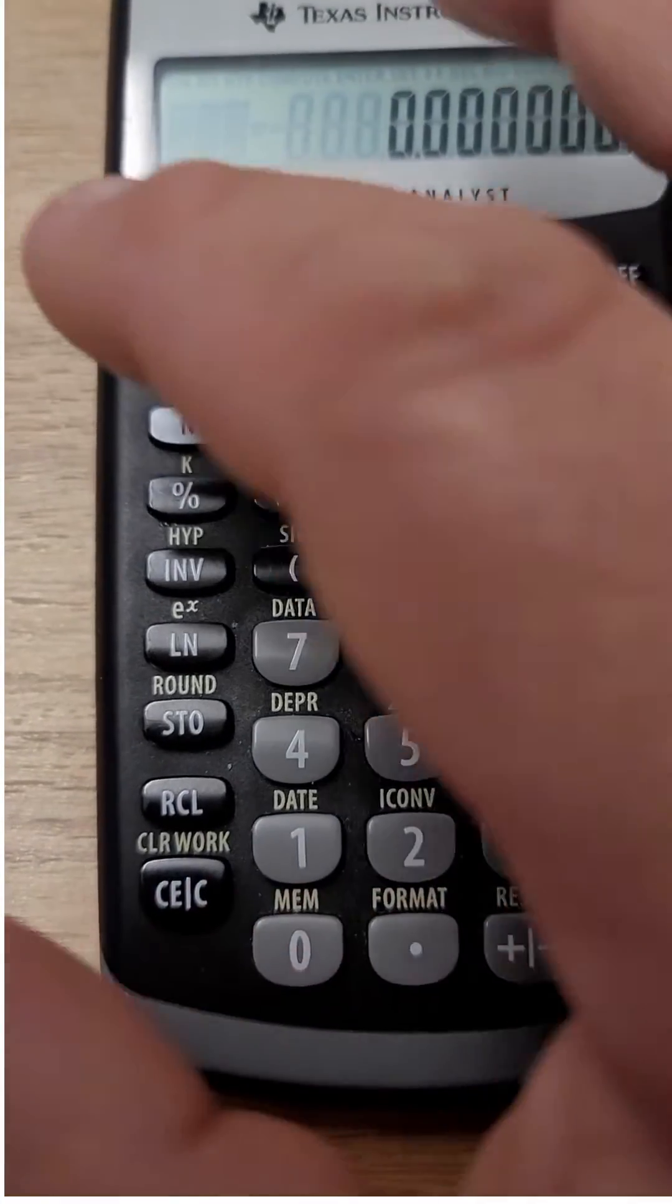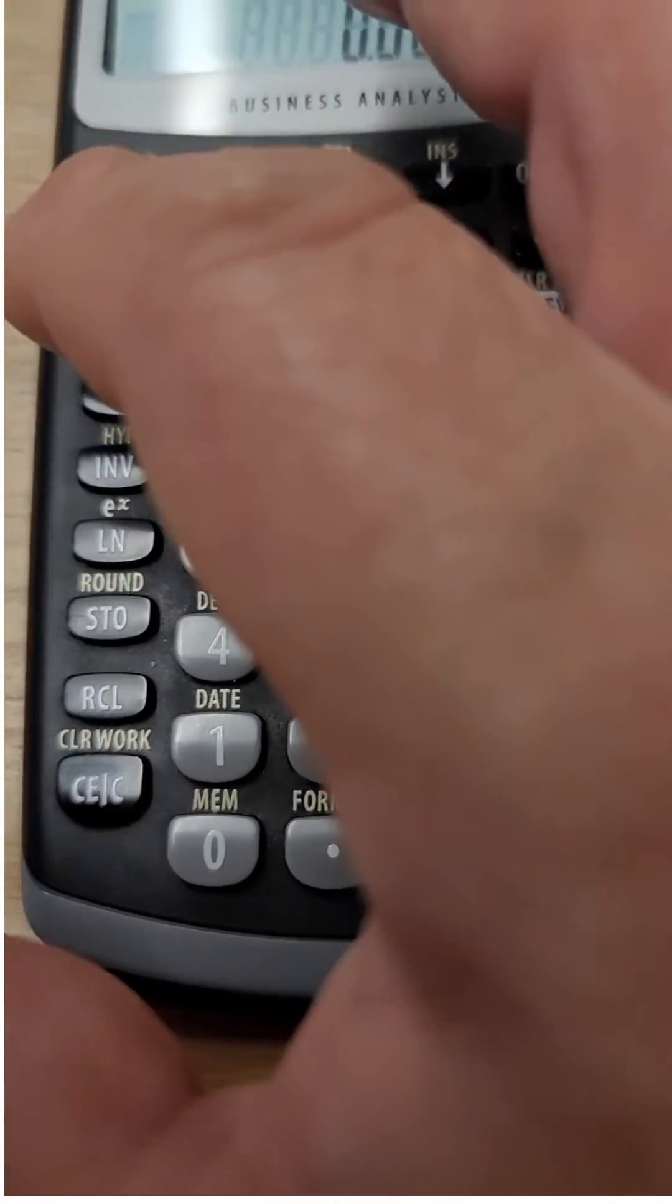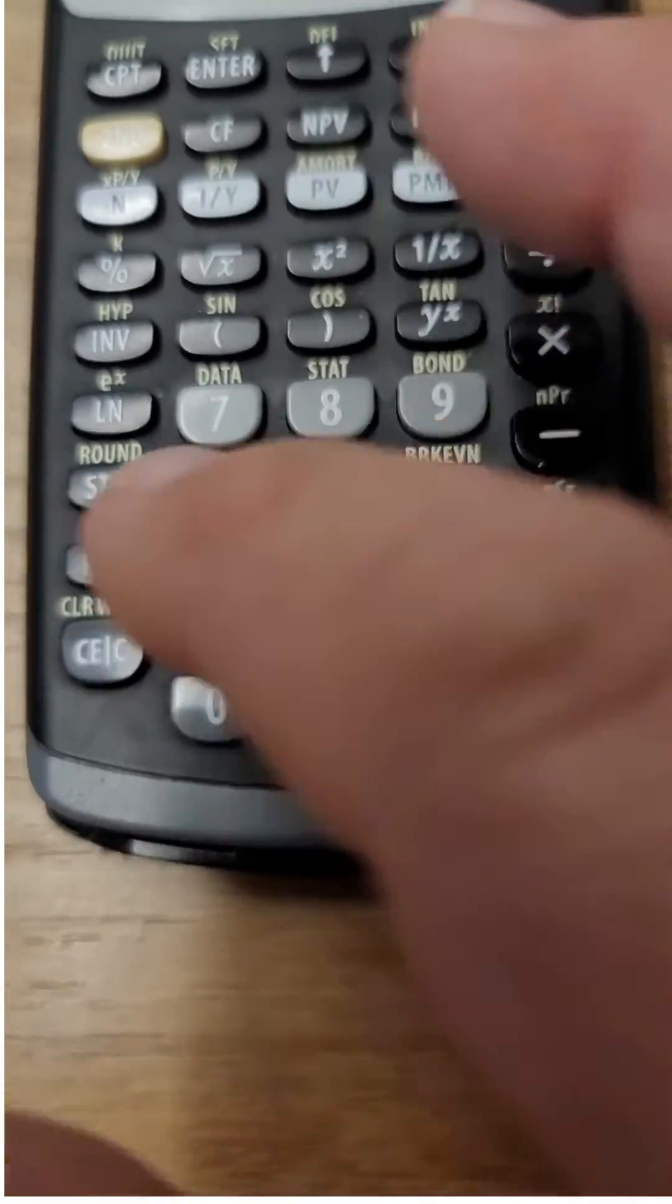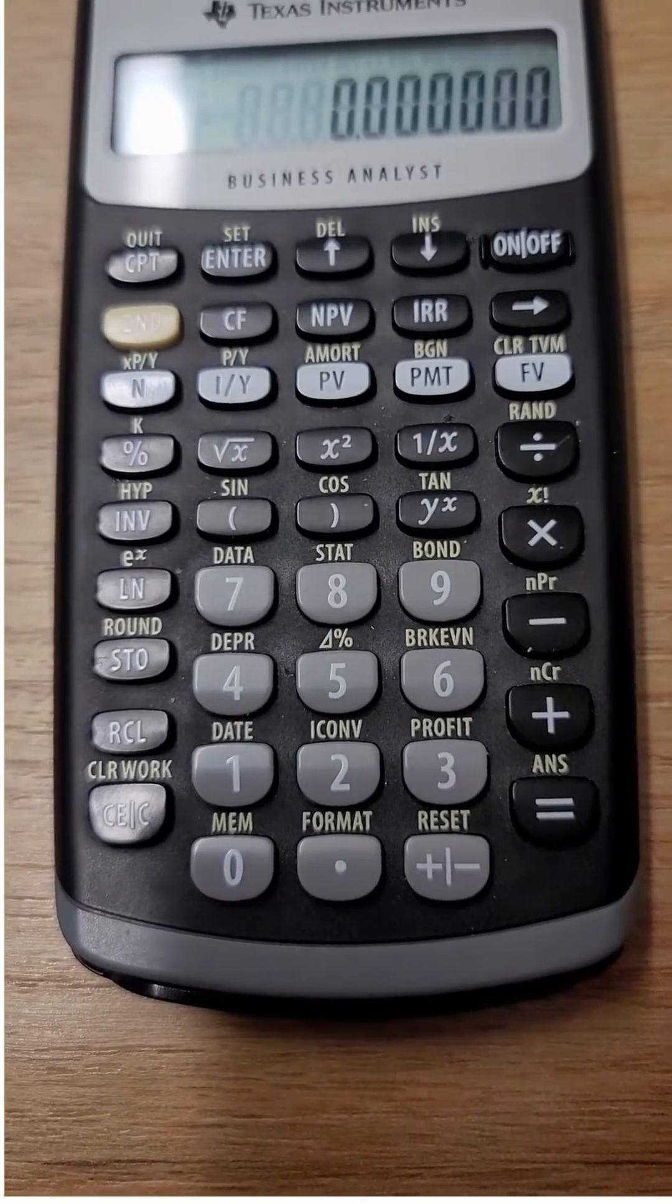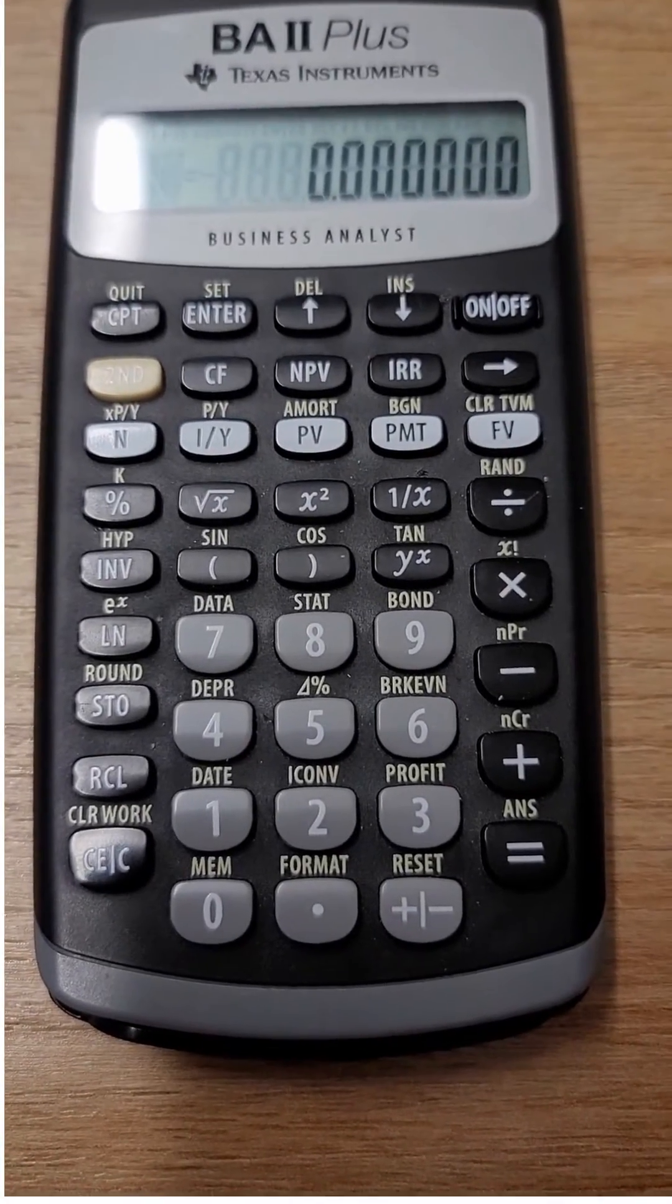So to demonstrate, you're going to hit clear time value of money and you're going to hit clear work. And that will clear everything out of its memory, and payment calculations will all be correct then.